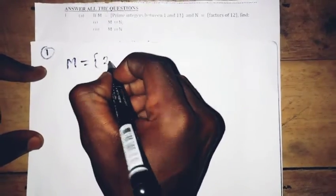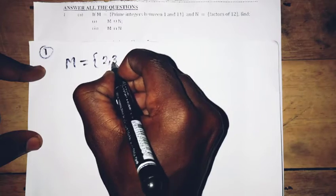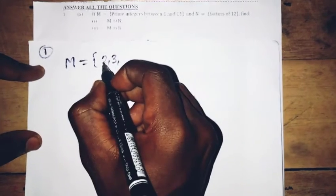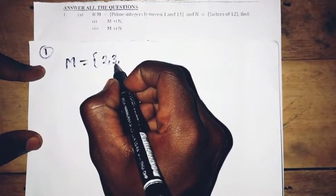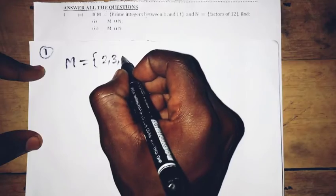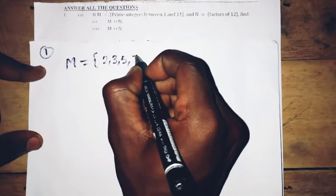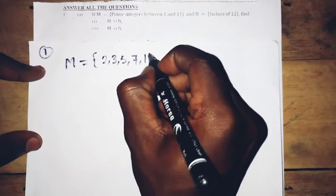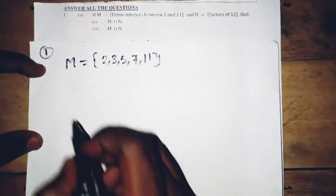Prime numbers have two factors — that is 1 and itself. So the factors of 2 are 1 and 2. Factors of 3 are 1 and 3. So the prime integers are 2, 3, 5, 7, and 11. That is M.